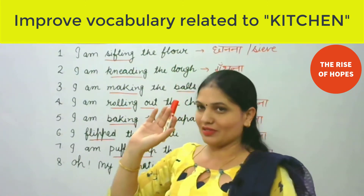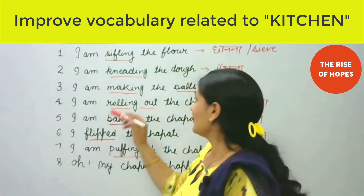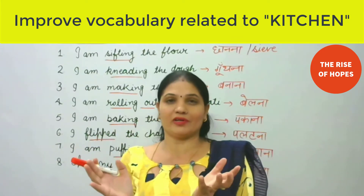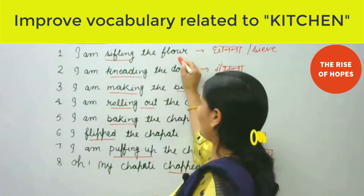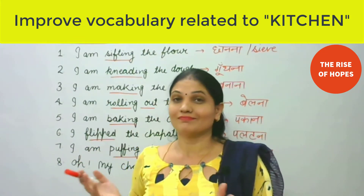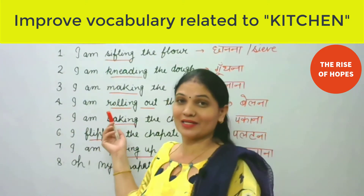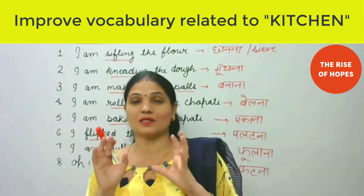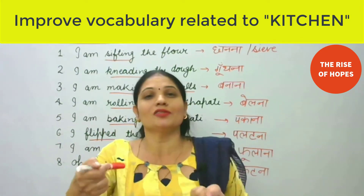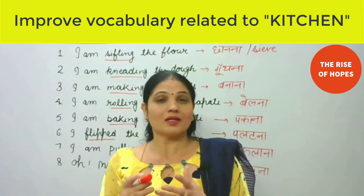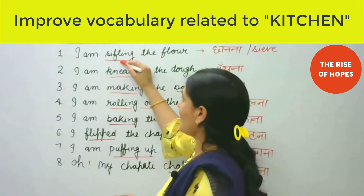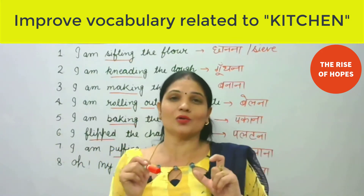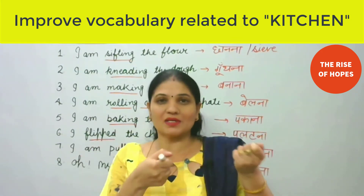I am sifting the flour. First of all, listen — this is flour, not flower. Aata jo hota hai, us ko hum flour bolte hain — flour, note the change in spelling. Aata jo hota hai, am hum pehle kya karenge? I am sifting the flour. Aap roti banane se pehle, chapati banane se pehle — I am sifting the flour. Sifting hota hai learners chanana. Aur hum sieve bhi bolte hain — sieve bhi chanana hota hai. I am sifting the flour.